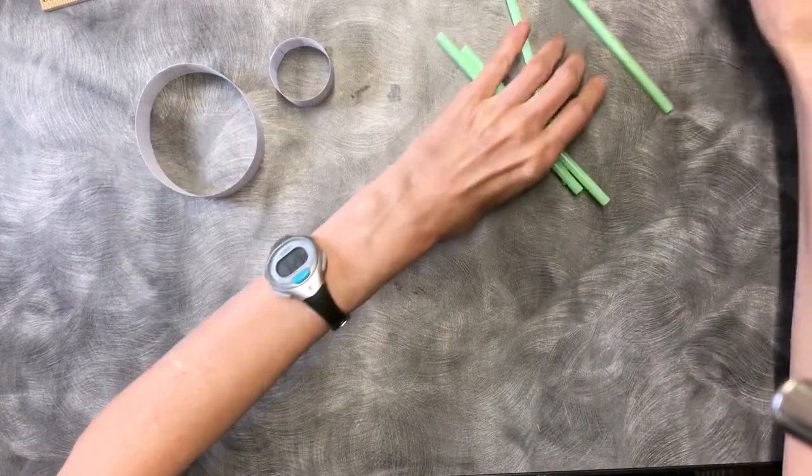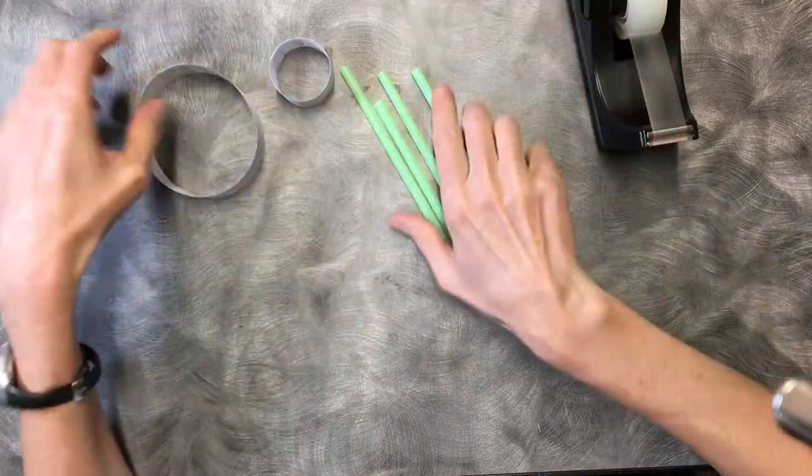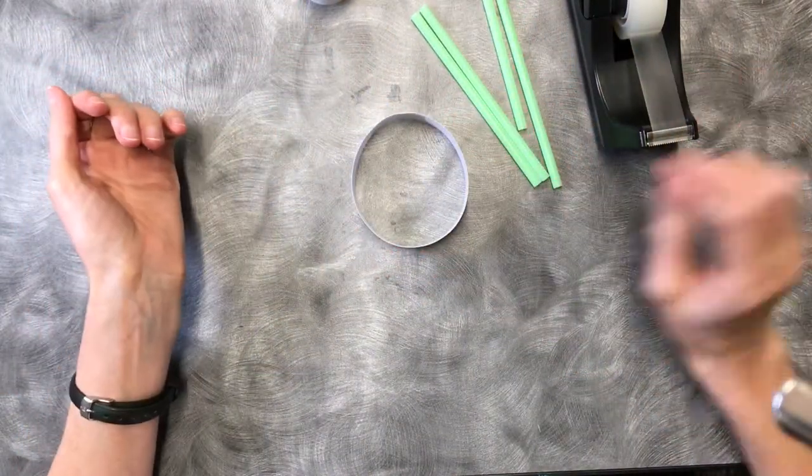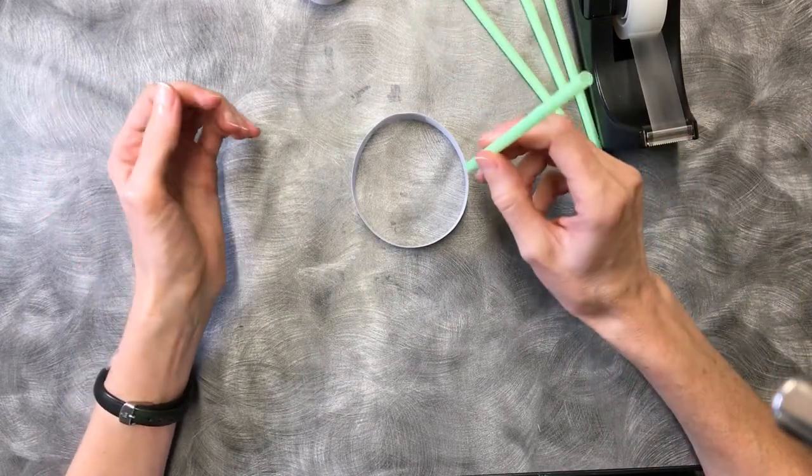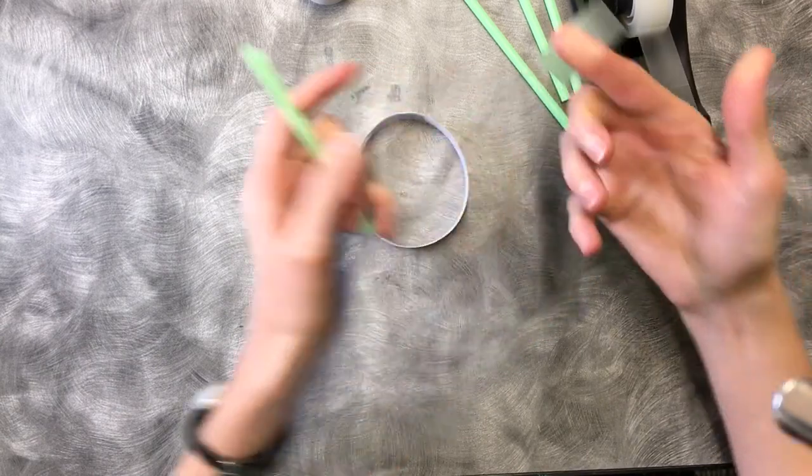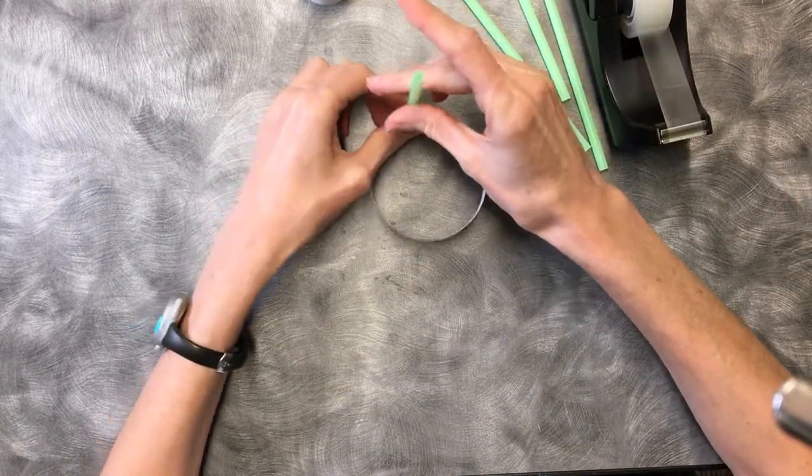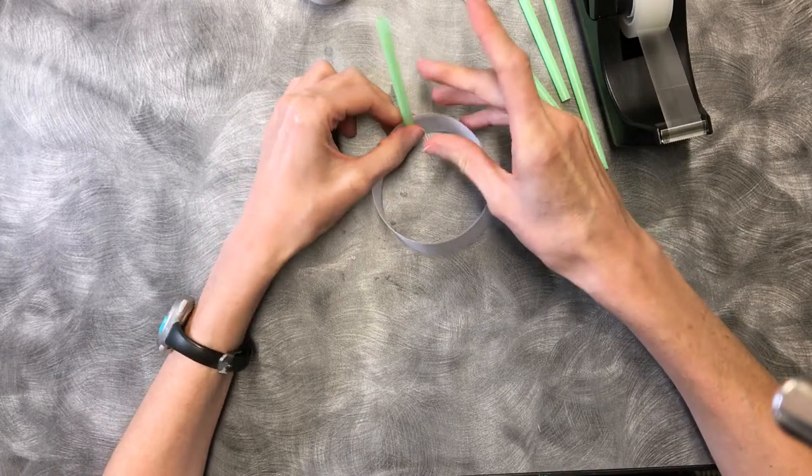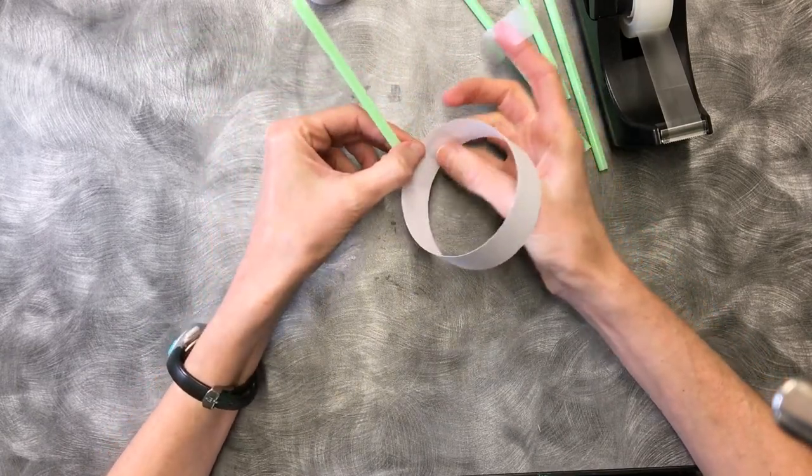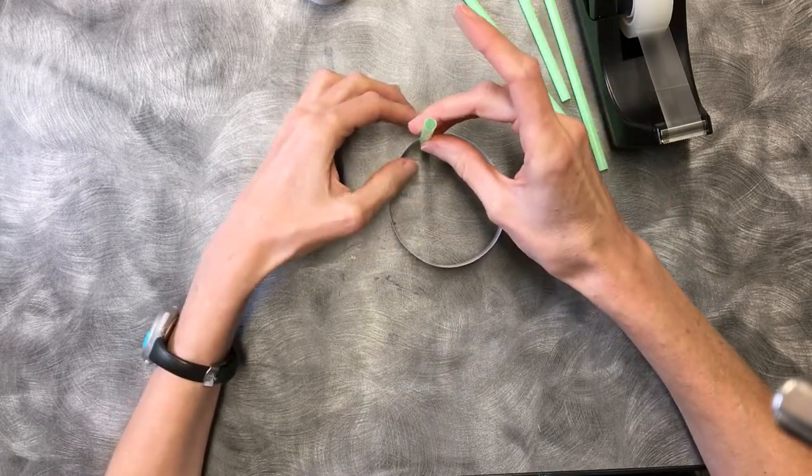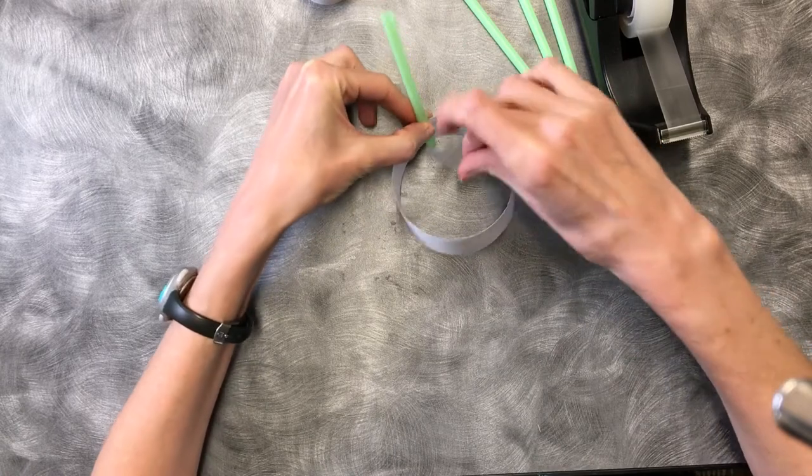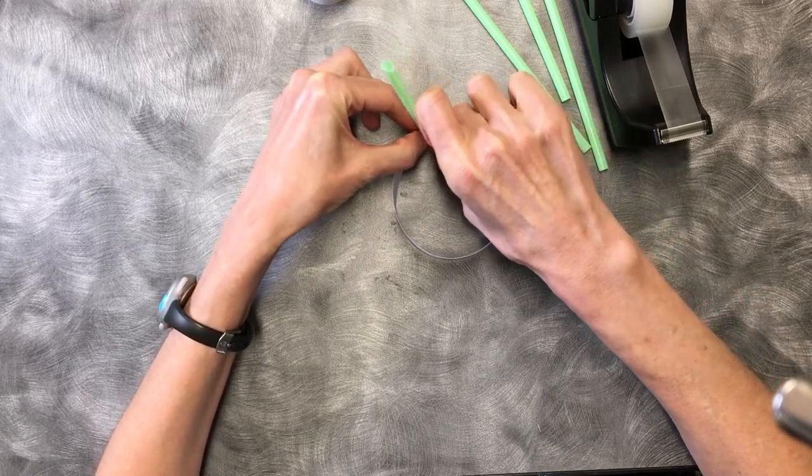We need our tape again. Four straws, big ring. What we're going to do is grab one straw and a small bit of tape and I'm going to put it inside the ring. I'm going to start with that place where I put the tape because the first one's usually the hardest. You're going to tape that straw down inside the ring.